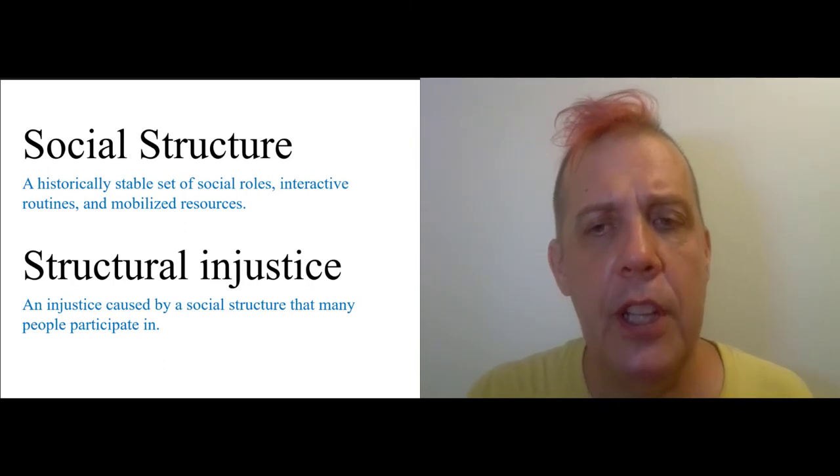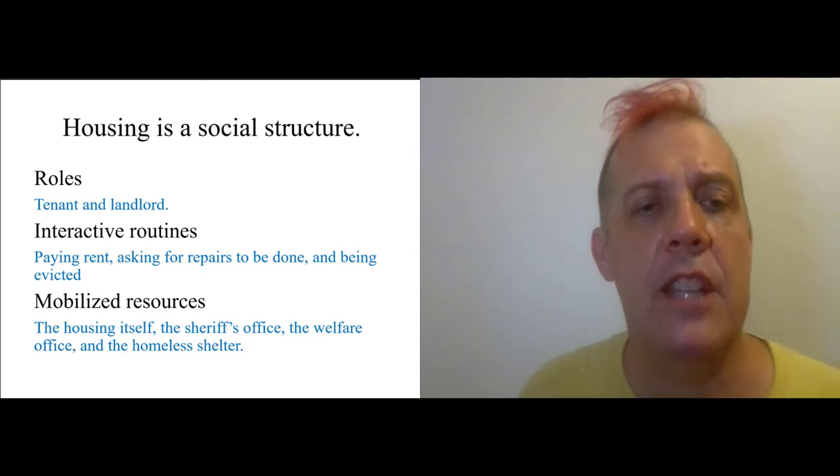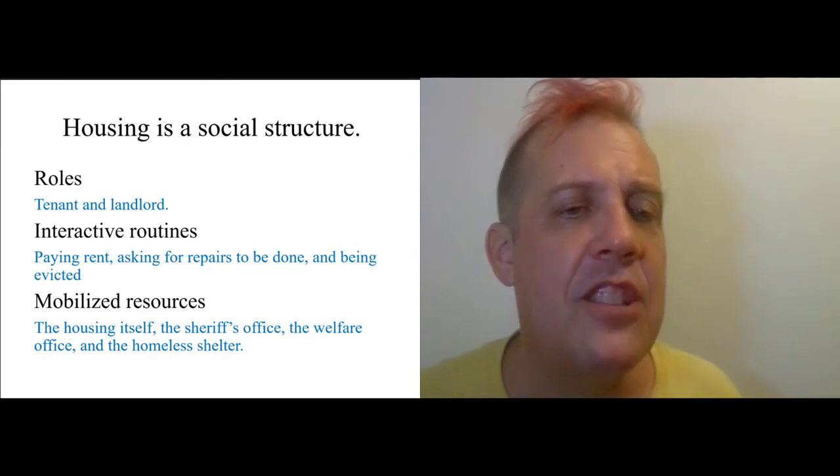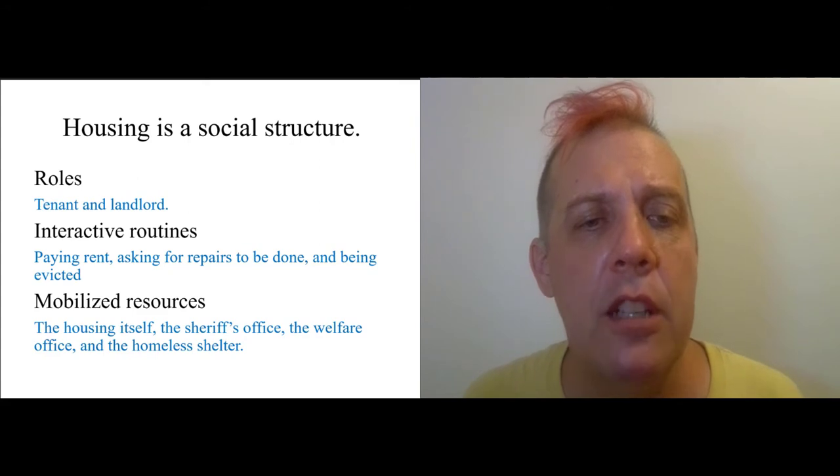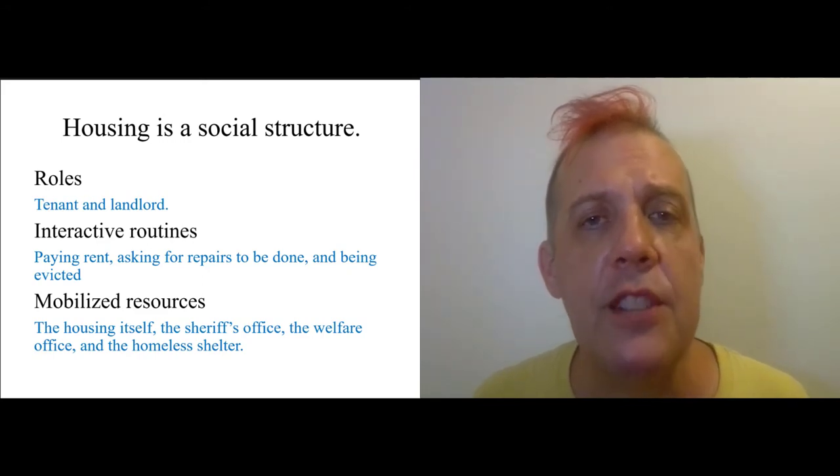Historical structures involve social roles that are stable, interactive routines that you're supposed to participate in if you're in those roles, and then mobilized resources. A structural injustice, according to Young, was an injustice caused by a social structure that many people participate in. So the thing to note here is that housing is actually a social structure. It has roles, tenant and landlord. It has interactive routines, paying rent, asking for repairs to be done, being evicted. And there are mobilized resources. The housing itself is a mobilized resource. The sheriff's office that can evict you is a mobilized resource. The welfare office that can help out the tenants is a mobilized resource. The homeless shelter, they call it the lodge, is a mobilized resource.